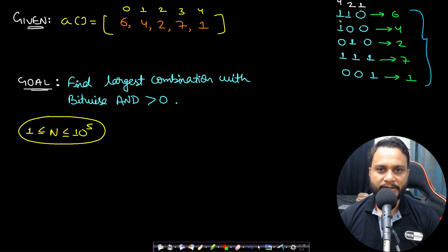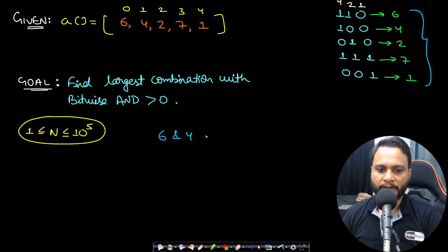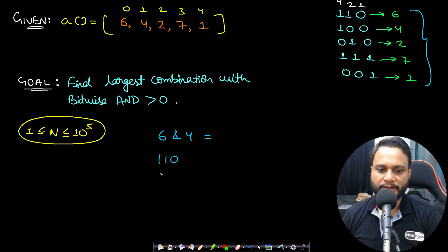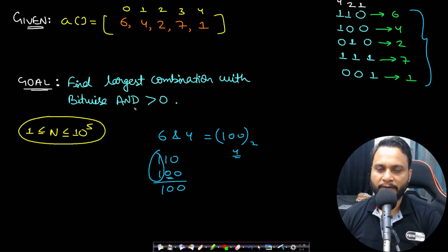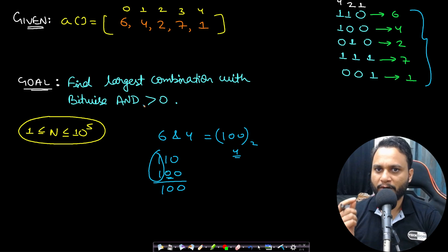For example, if you take 6 AND 4: 6 is 110 and 4 is 100, so the result is 100, which is 4. Only the common set bits are preserved — if any position has a zero, the AND at that position will always be zero. So for a combination's AND to be greater than zero, there must be at least one common bit position where all items have a set bit.